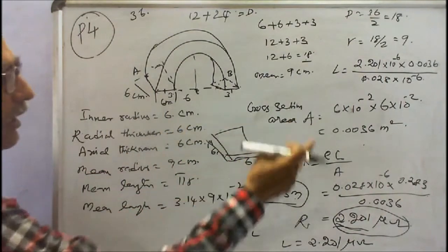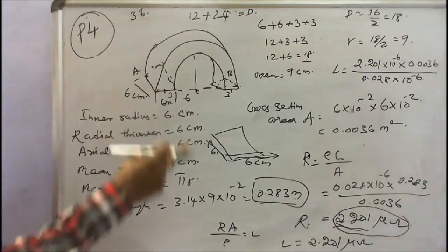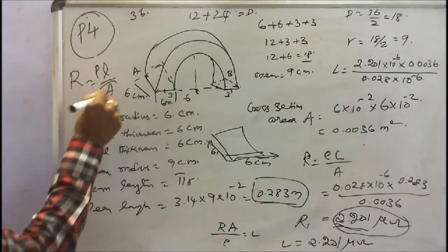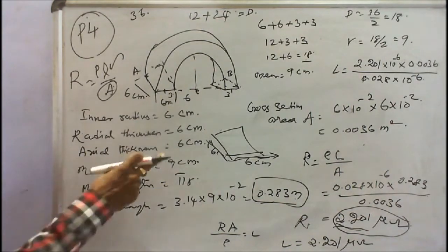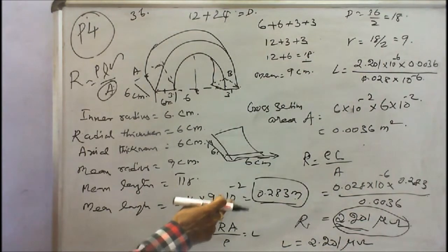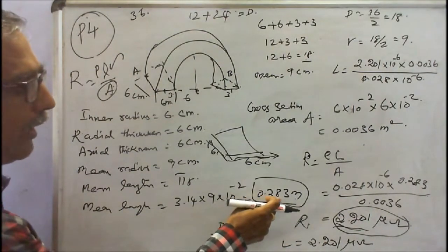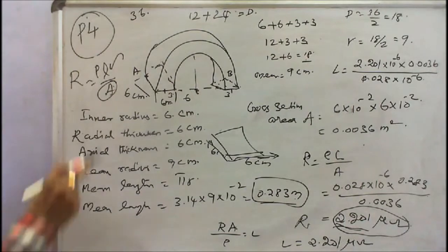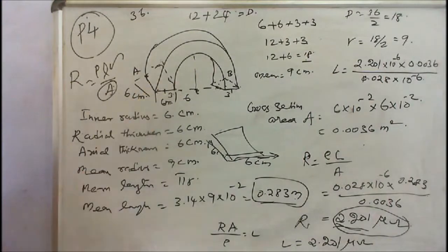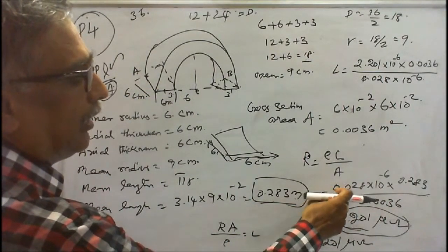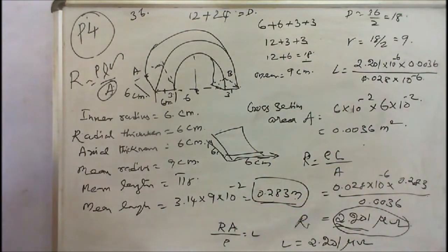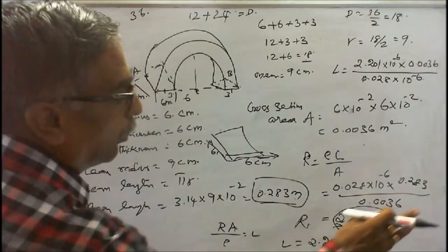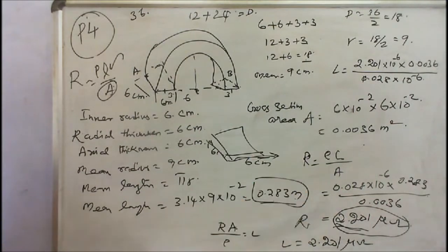Step 1: cross-sectional area A = 0.0036 m². Step 2: mean length for the semi-circular path = π × r_mean = 3.14 × 9 × 10⁻² = 0.283 meters. Resistivity = 0.028 × 10⁻⁶ ohm-meter. Substituting into R = rho × L / A: R = (0.028 × 10⁻⁶ × 0.283) / 0.0036 = 2.201 micro-ohms.